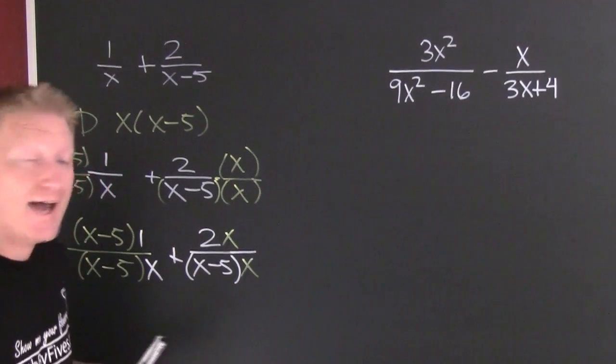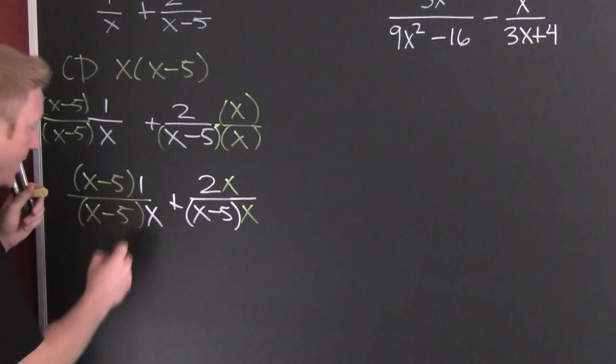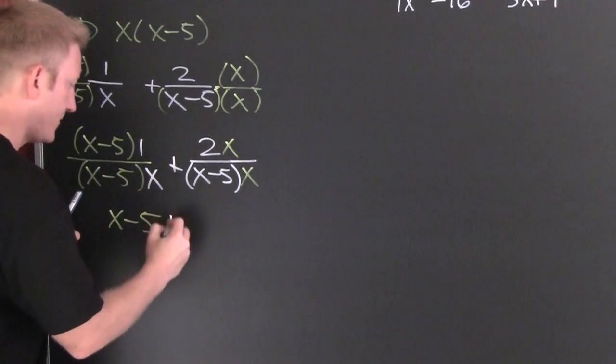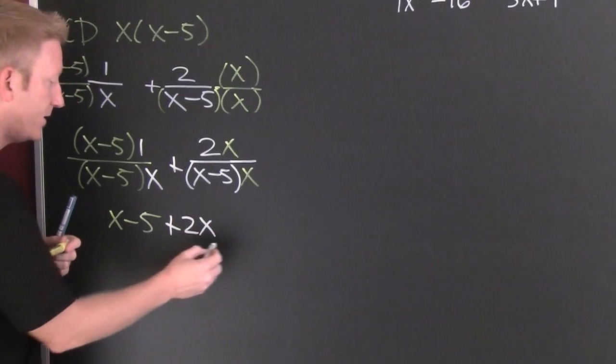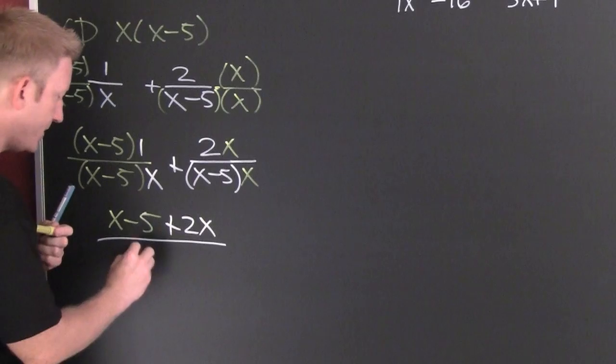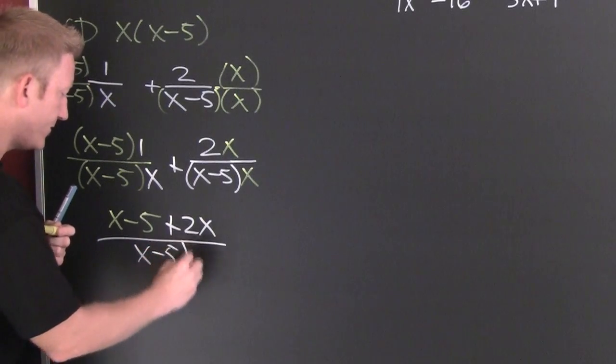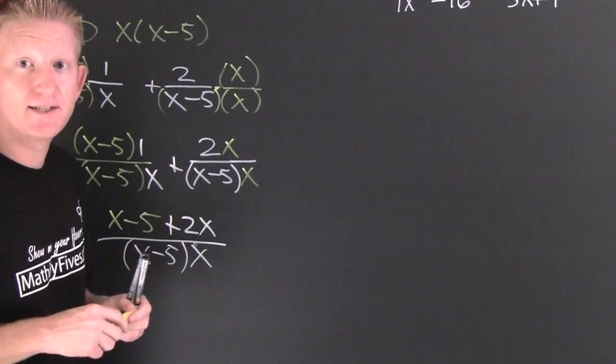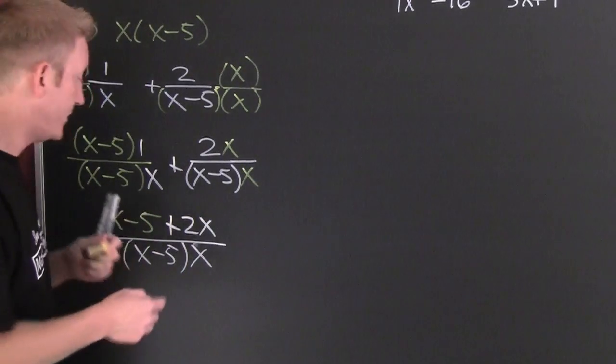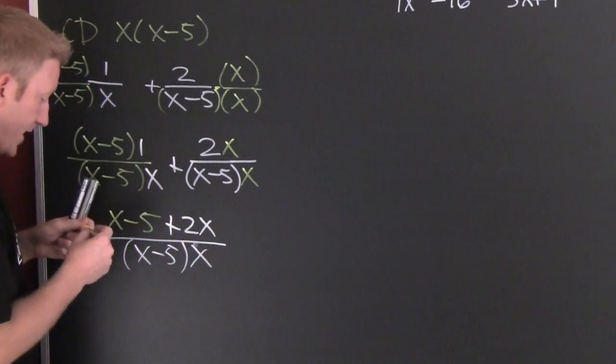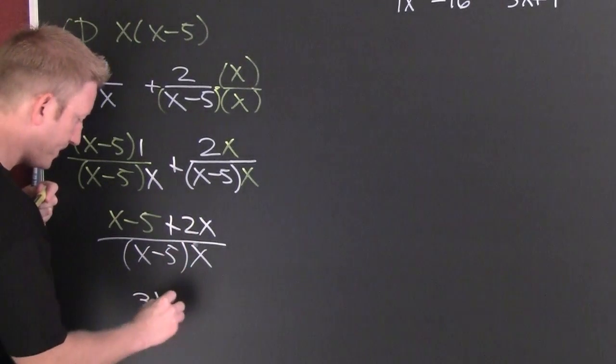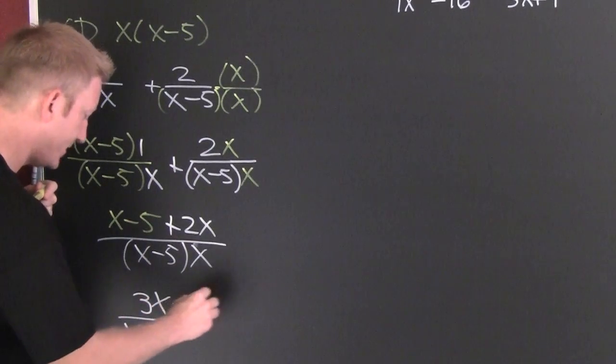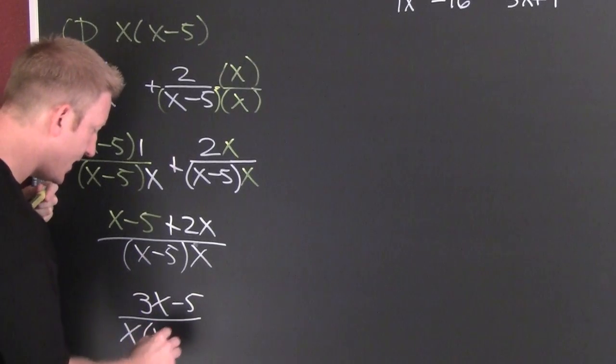So now what do I do? Add them. I'm gonna add the two. I'm gonna add their numerators. I'm gonna add x minus 5 plus 2x all over the common denominator of x minus 5 times x. I'm gonna gather collect and combine. My 2x and my x are gonna give me 3x.